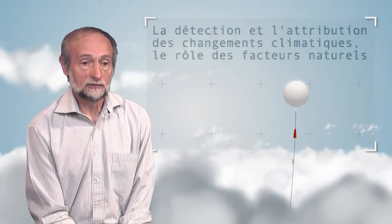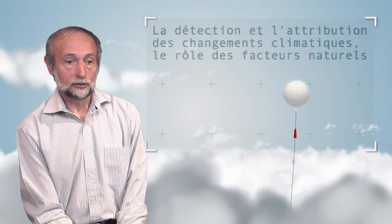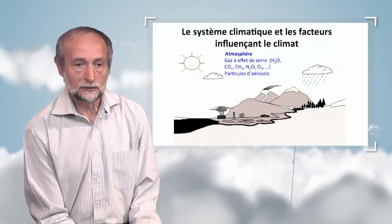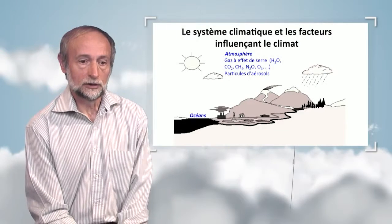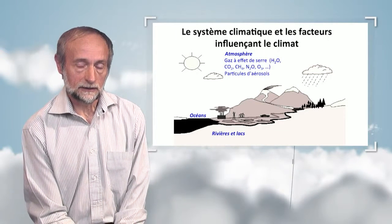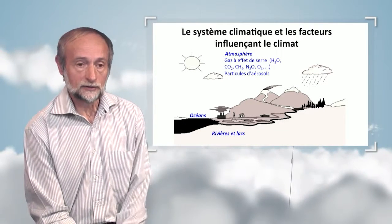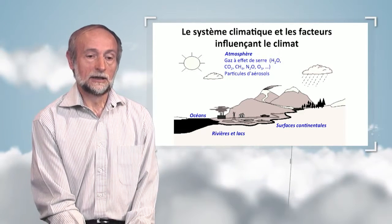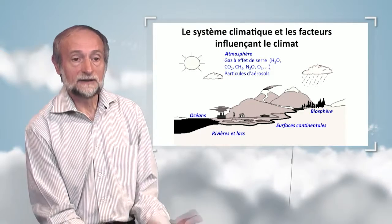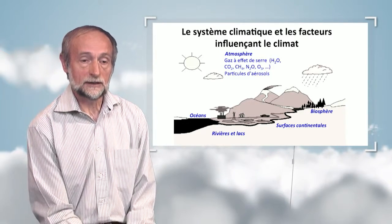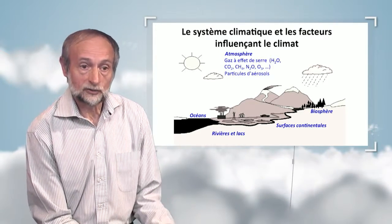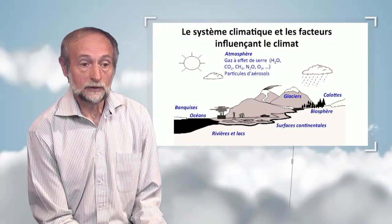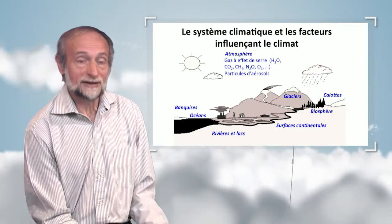What do we refer to when we talk about the climatic system? The climatic system is traditionally made of the atmosphere, the oceans, rivers, lakes — also referred to as the hydrosphere — continental surfaces, the lithosphere, the biosphere, i.e. the living part on the surface of the Earth, in the oceans and on land, and finally the fifth component is the cryosphere, the frozen part.